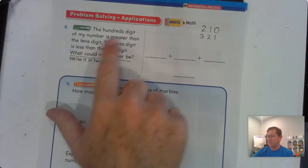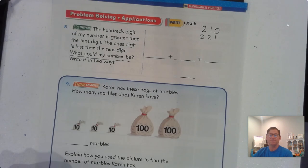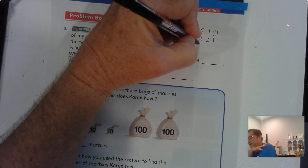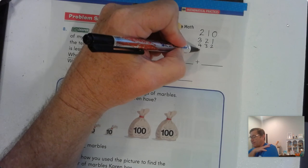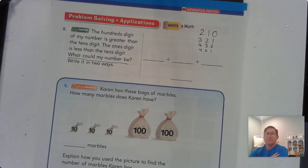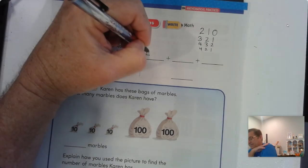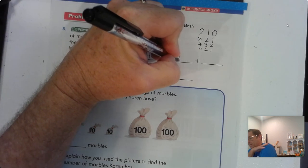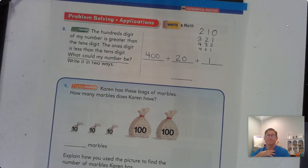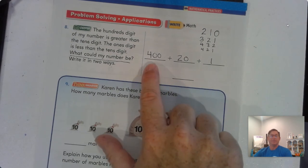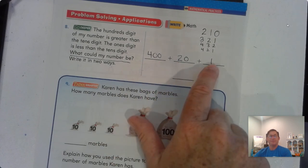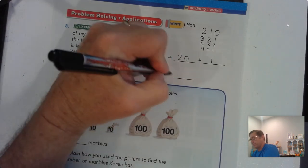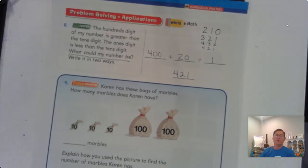So there's going to be multiple answers. You just have to make sure that your answer matches the clues. Again, I could go 4, 3, 2. I could say 421. Multiple, multiple answers. All right, I'm going to go ahead and say 421. So the hundreds digit is greater than the tens, and the ones digit is less than the tens. So 421.